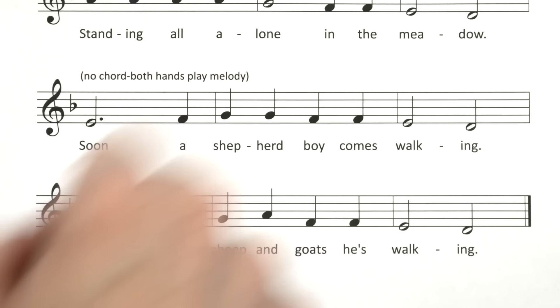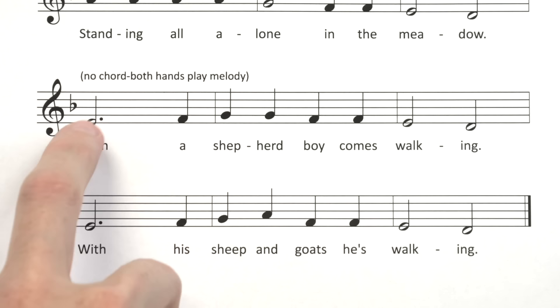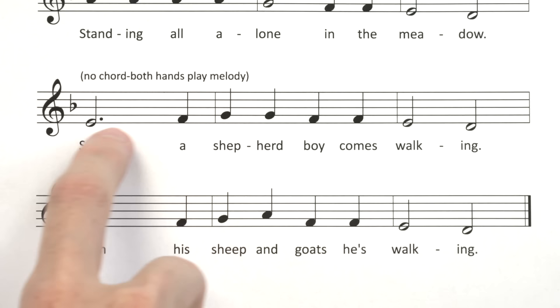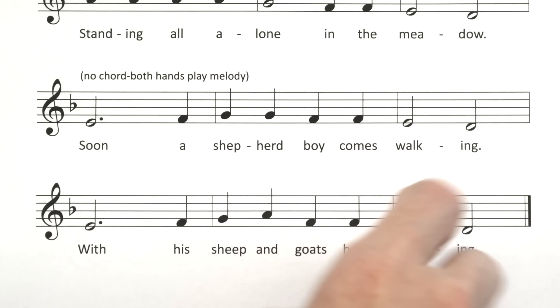Now, can you point and tell me how these notes are moving? Tell me if they're stepping, skipping, or repeating. Say start for the first note. Go. The correct answer is start, step up, step up, repeat, step down, repeat, step down, step down. Great, let's try playing that on the piano.